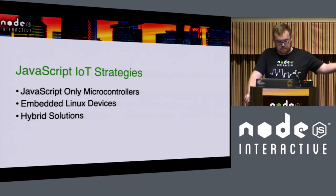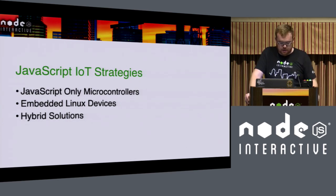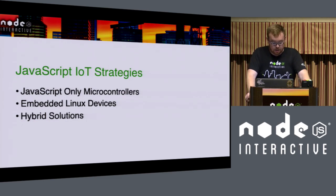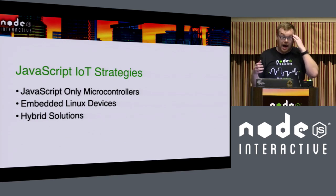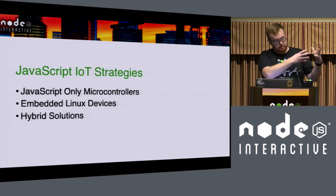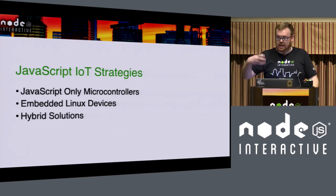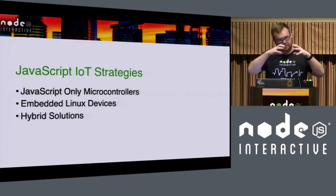Then there's embedded Linux devices, which are full-fledged PCs in their own right — they boot up, there's a command line on them, you can run desktop applications on some of them. They've got ARM chips, basically the same as in your phones, and they can run full Node. And then there's what I call hybrid solutions, where you have a host PC running Node.js that talks over a USB cable or Bluetooth to an Arduino with some firmware — basically a dumb thin client — and the brains is the host computer.